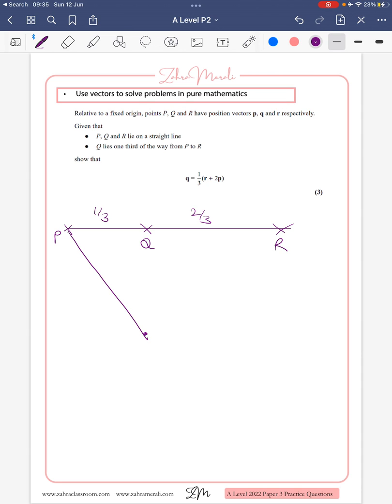Remember, a vector is represented from an origin, so that's going to represent small p, that's small q, and that's small r.